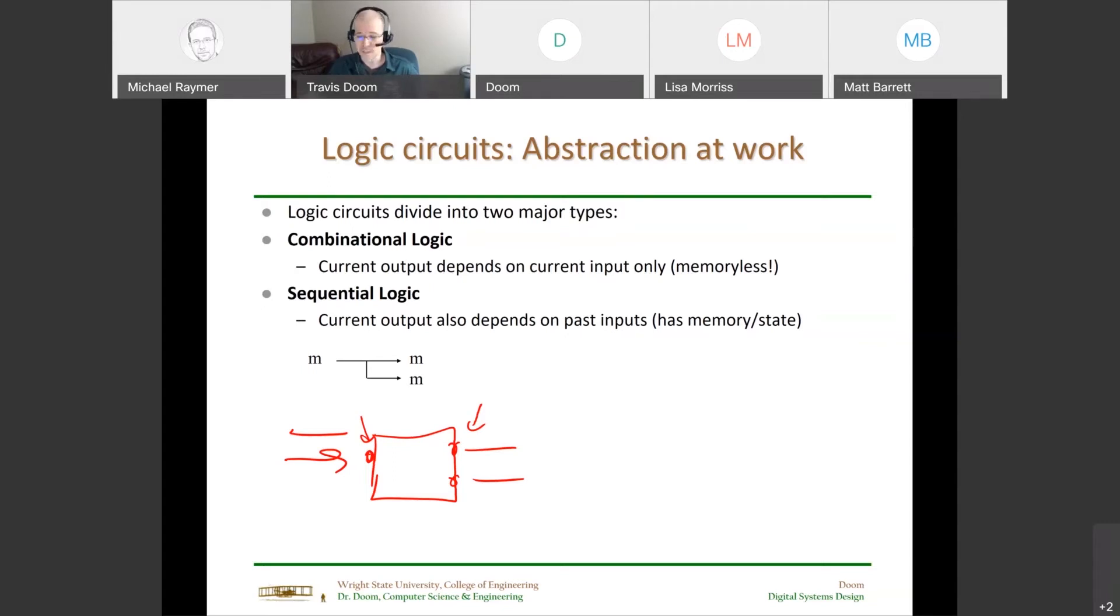So an engineer would say, well, what you have here is a device where you give it a number. Granted, it's encoded in a metal rod, whatever. Those are details. And you get a copy of that number. You get two instances of that number at the other end. That's great. We're going to make a little symbol. And this symbol is what we're going to use in our higher level designs to mean that function, the take a value m. And now I have two copies of that value m. This schematic representation is something that I can use in design because we come to an agreement about what this is going to mean. This means this function.